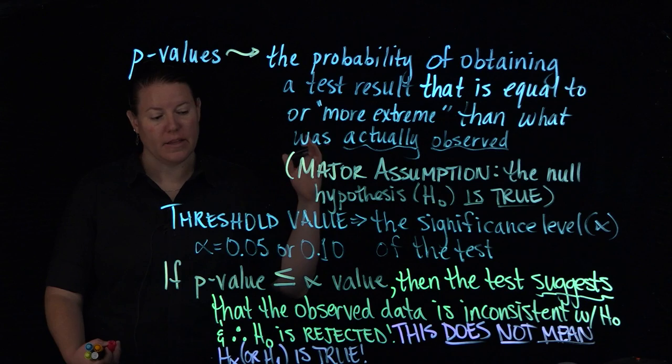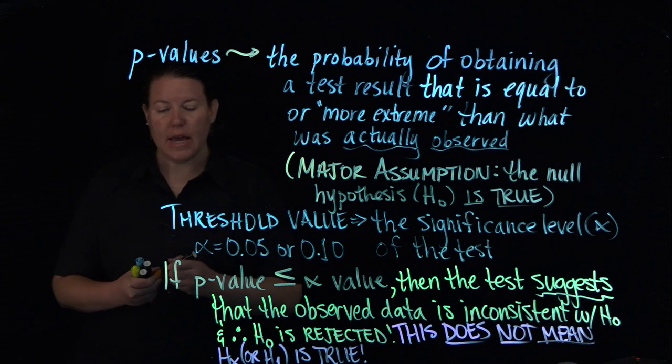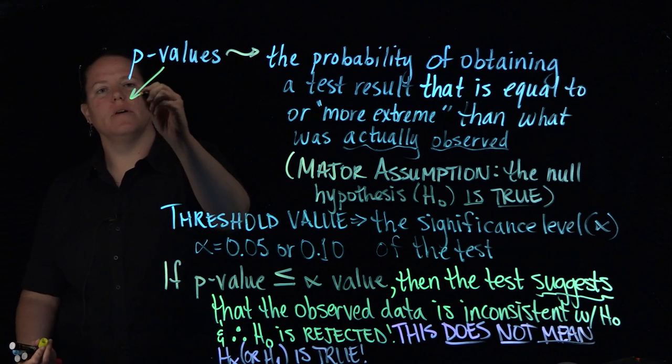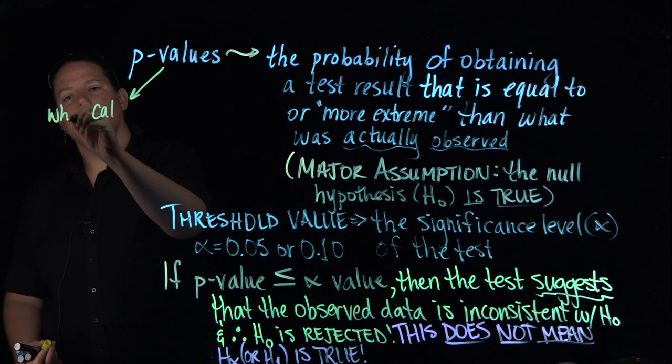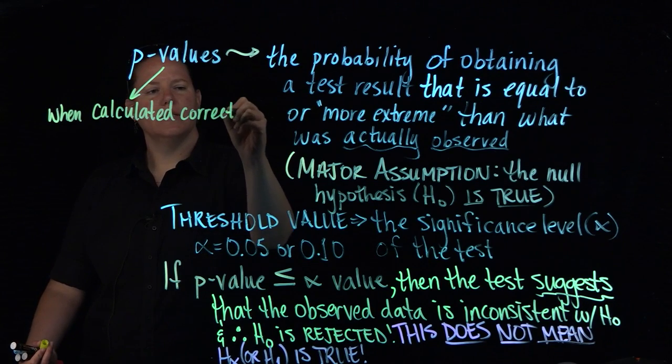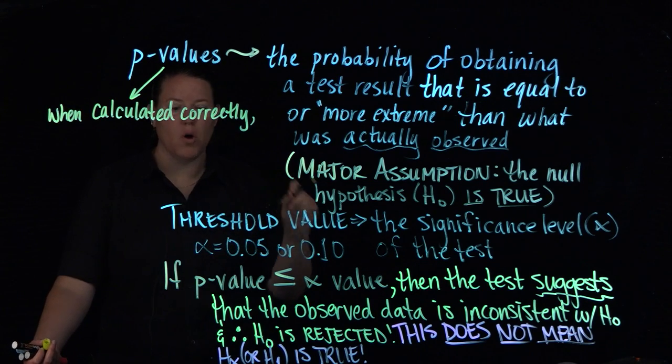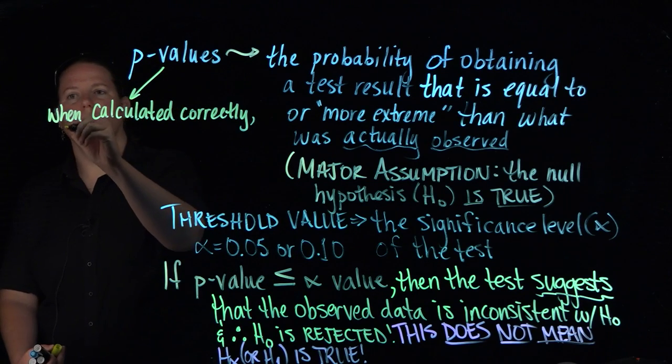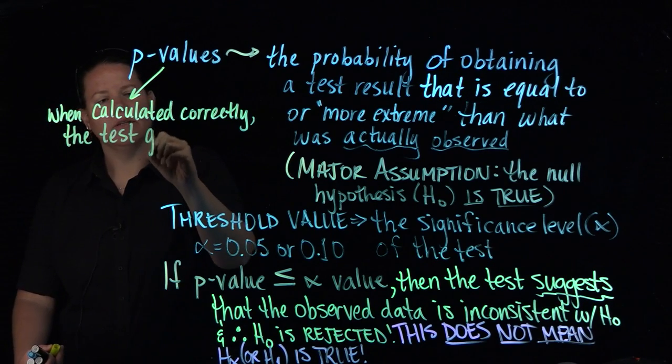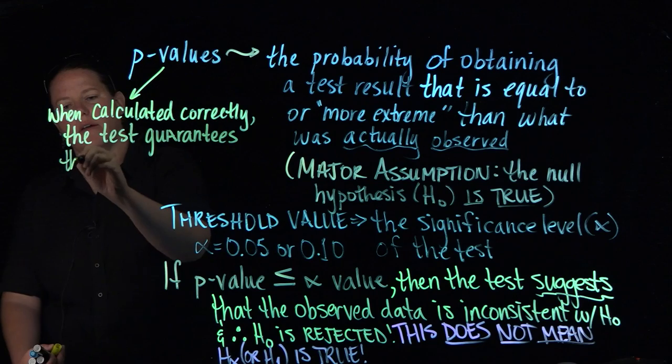That's not the same as saying that it's 100% true at any given point. So what we can say in the end is we can say that when the p-value is calculated correctly, when this is calculated correctly, what we can say is that the test can guarantee that type 1 error is at most alpha. So when calculated correctly,